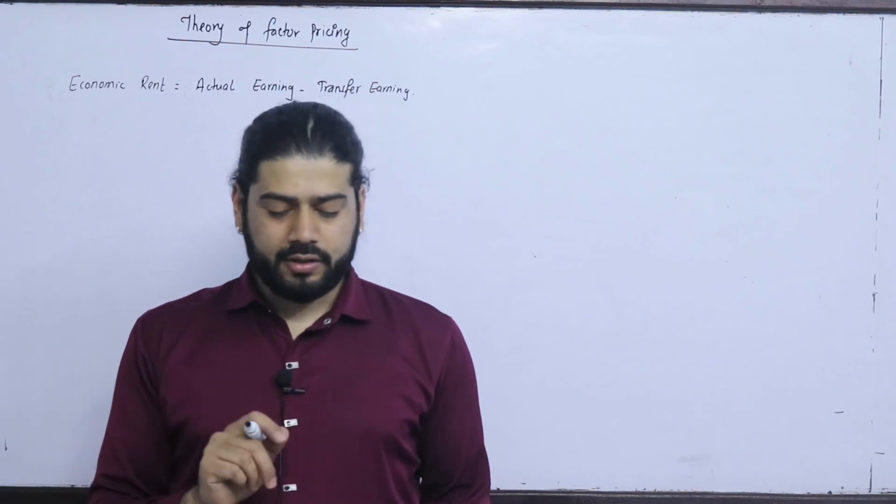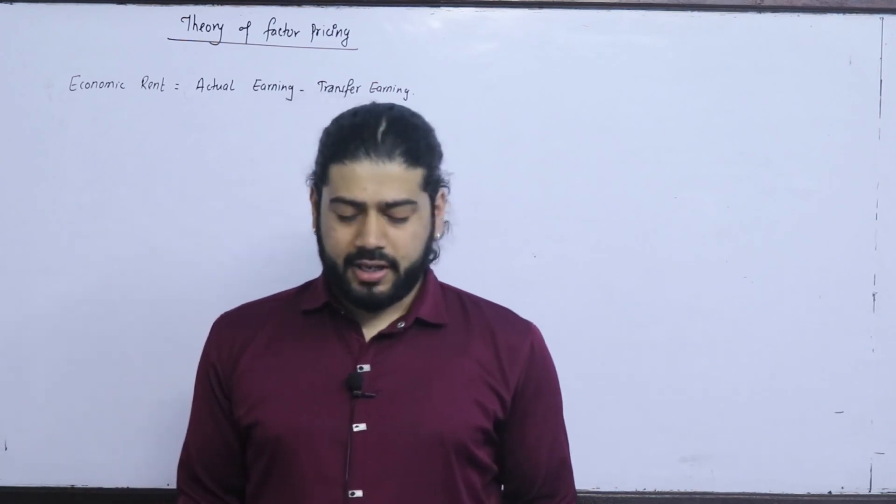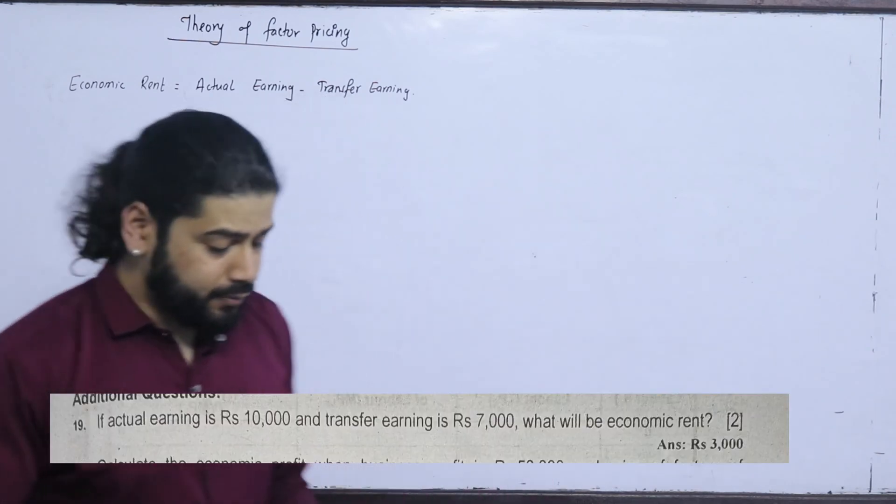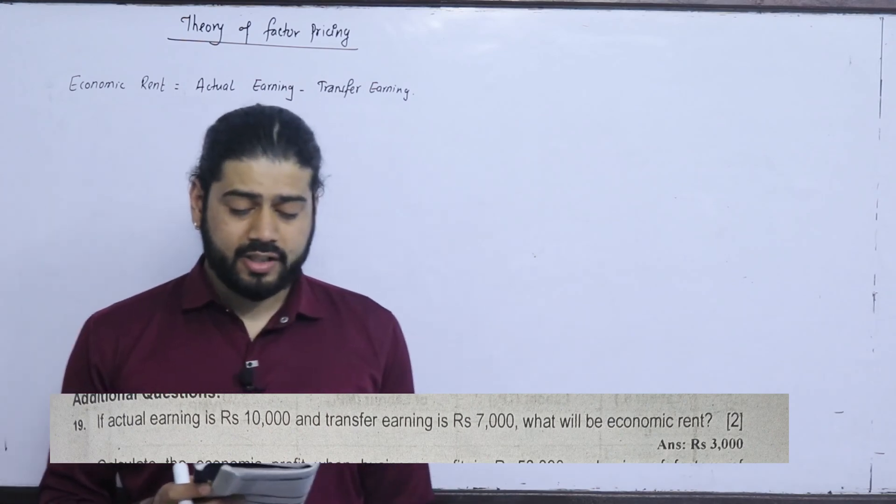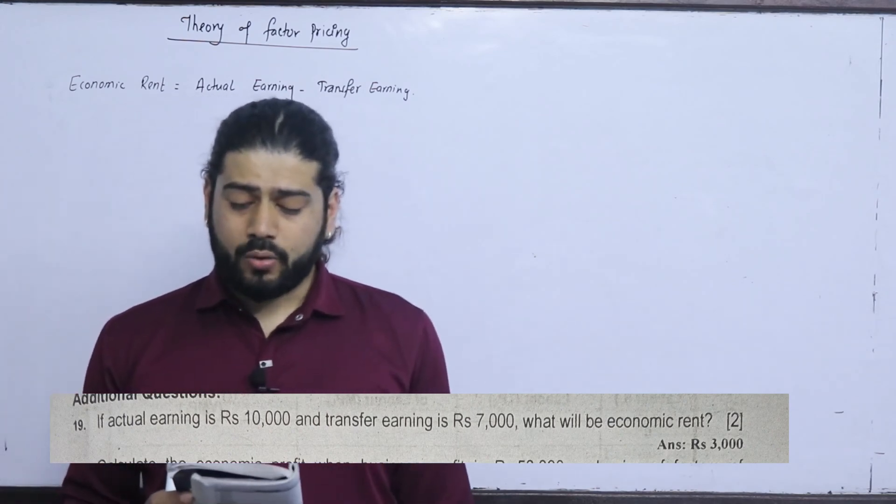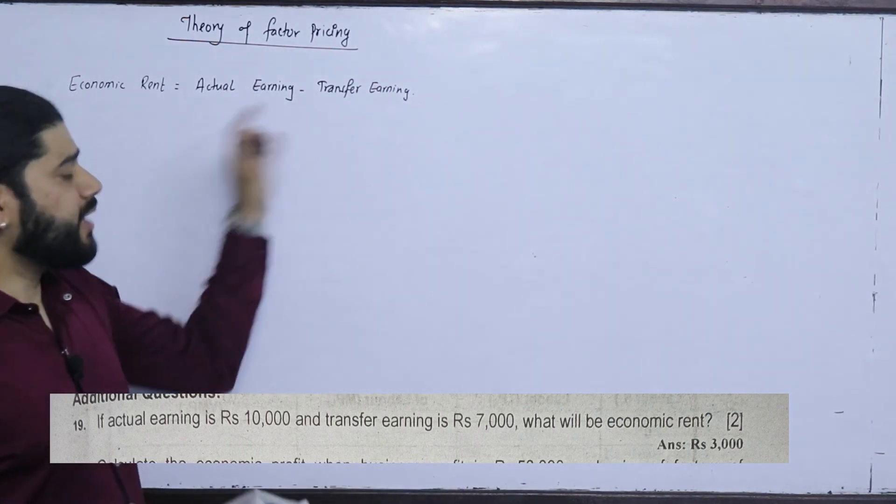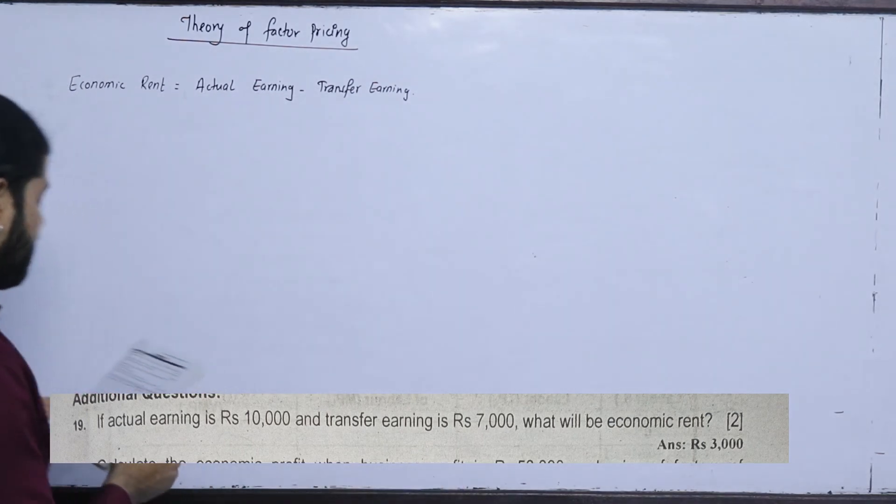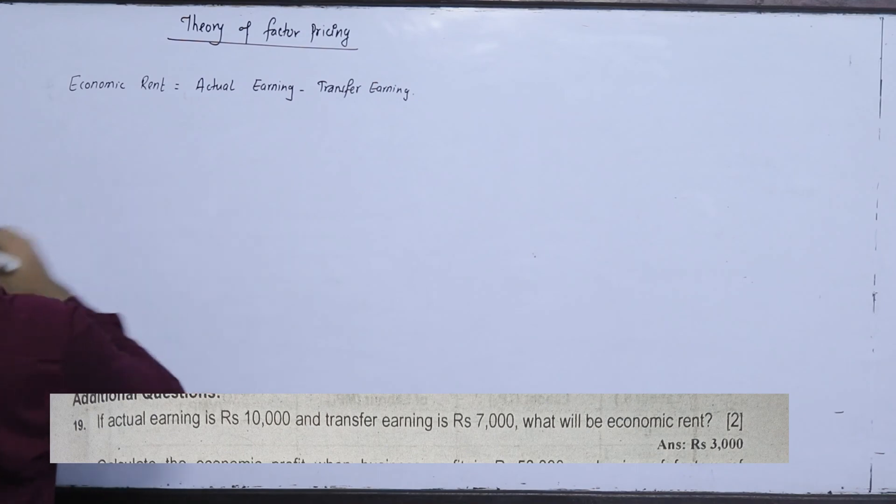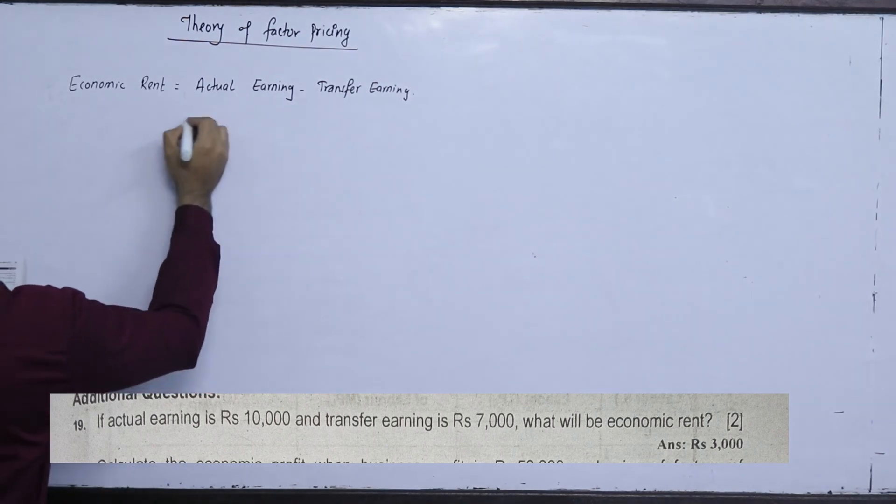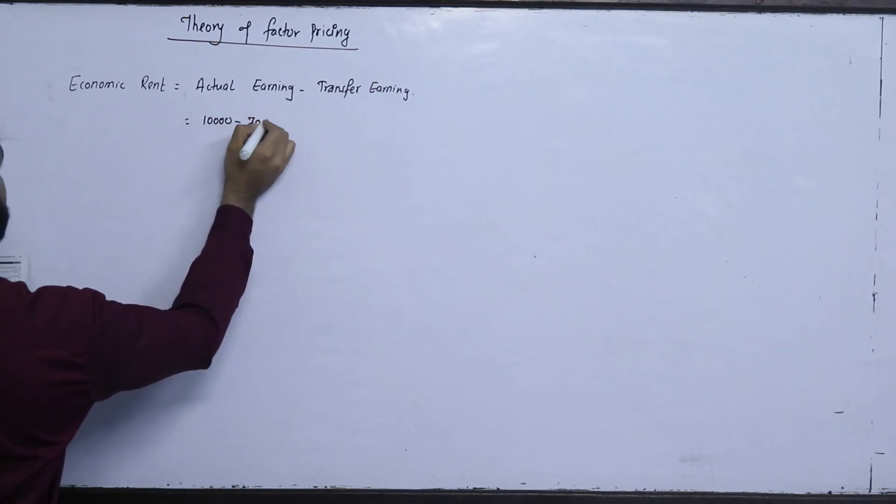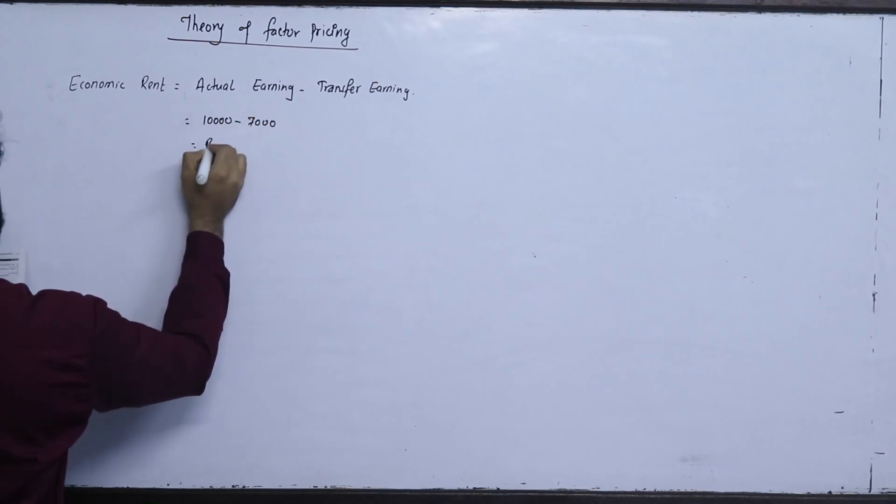Now, what is the numerical equation? First, I will tell you the question. If actual earnings is Rs. 10,000 and transfer earnings is Rs. 7,000, what will be the economic rent? The actual earnings is Rs. 10,000 minus 7,000 is Rs. 3,000.